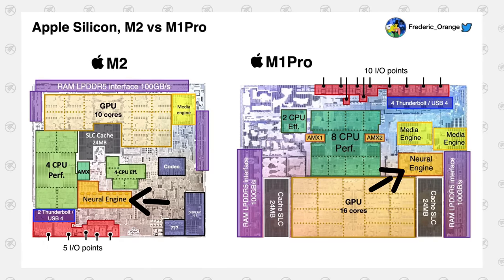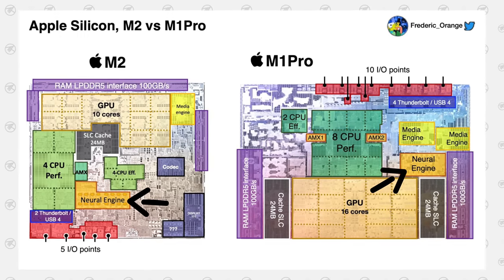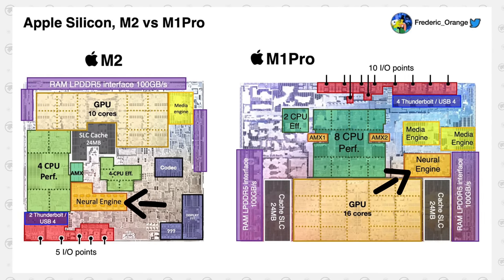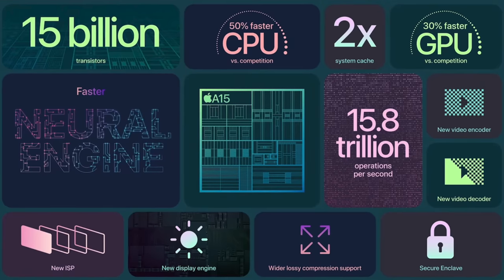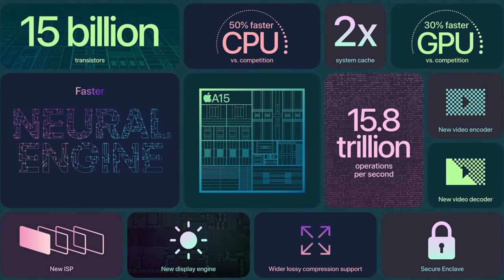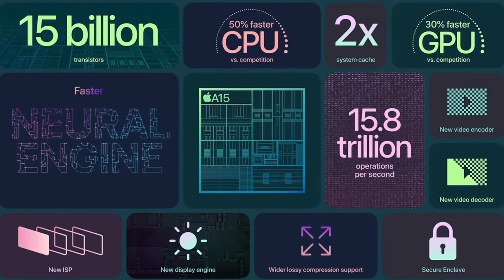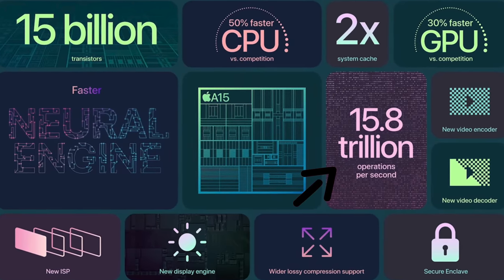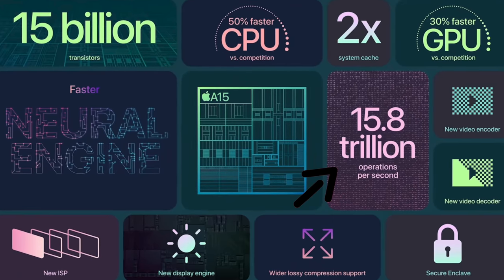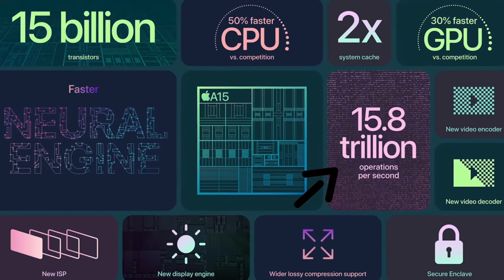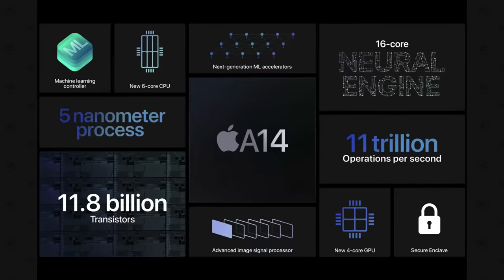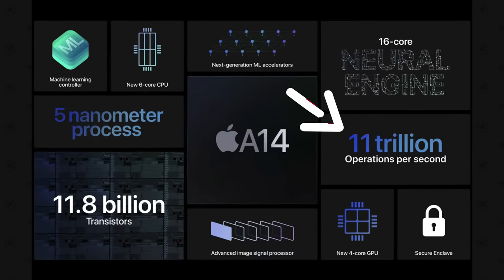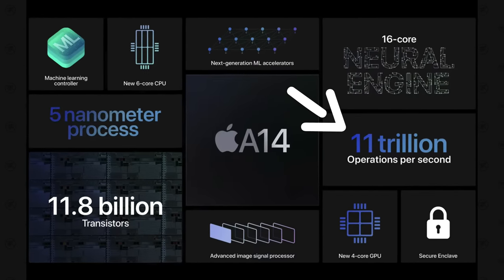Then we have the Neural Engine, which looks quite a bit larger on the M2 chip. It's actually the 2nd generation Neural Engine with up to 15.8 trillion operations per second, carried over directly from the A15 chip, compared to the M1 Pro's older version with only 11 trillion operations per second.